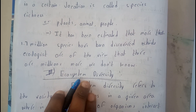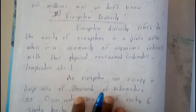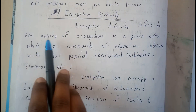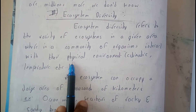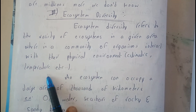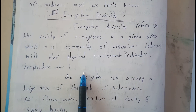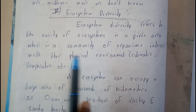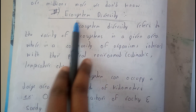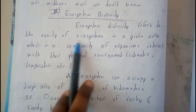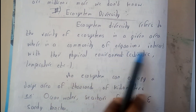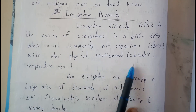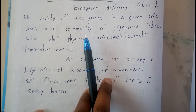Ecosystem diversity refers to the variety of ecosystems in a given area wherein a community of organisms interact with the physical environment, including climate and temperature. We have discussed all about ecosystems in the previous chapter, and those points apply here as well.